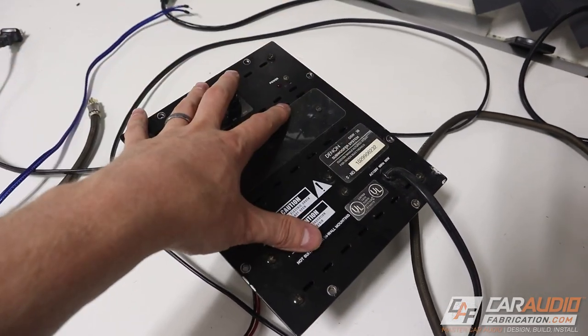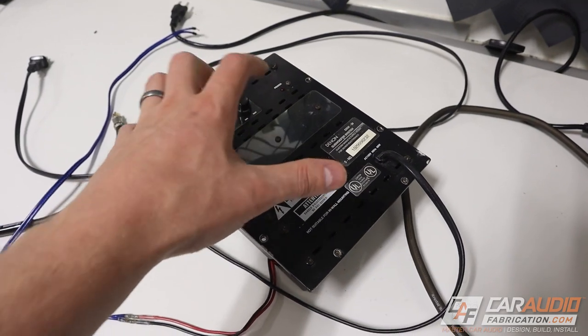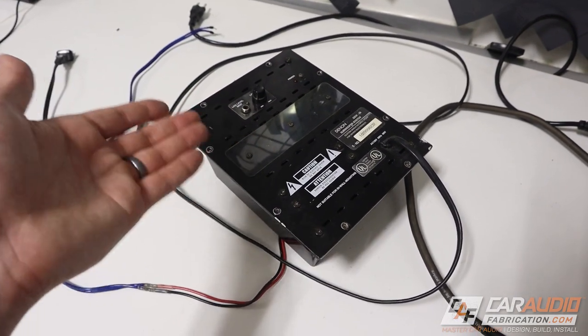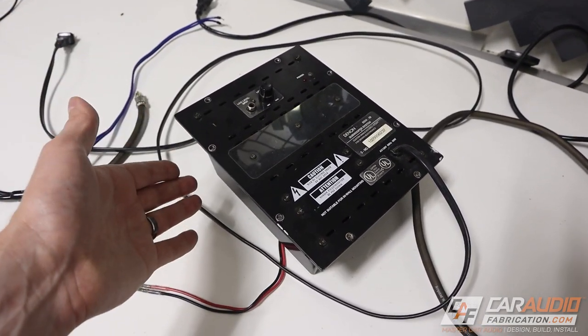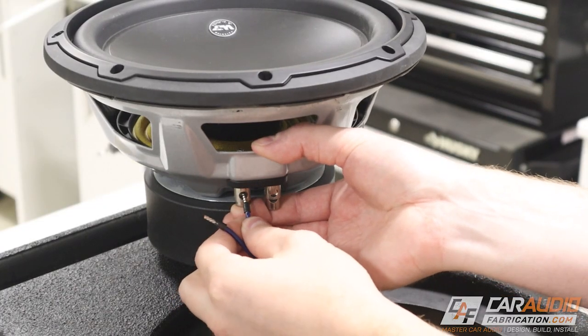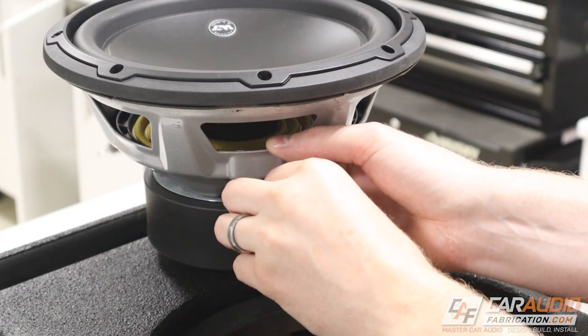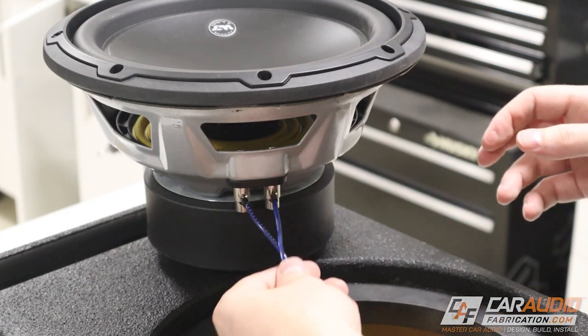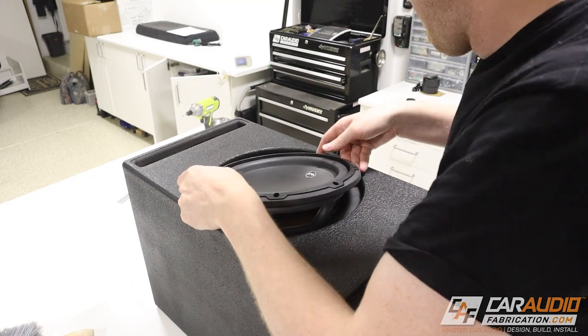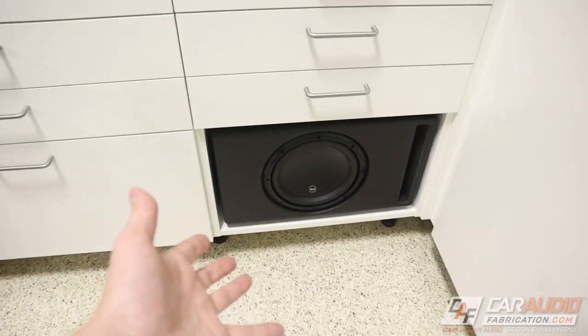And then we just need the RCA signal input going in here, which we will get the signal for out of our source unit. Eventually, I would like to switch away from using this plate amplifier and instead have a large power supply that I could use to power a car audio amplifier. But if you've ever priced them out, you probably know that really powerful power supplies that can do like 30 or 40 amps, those can be pretty pricey. So maybe something for the future. But right now I'm using this home audio amp.